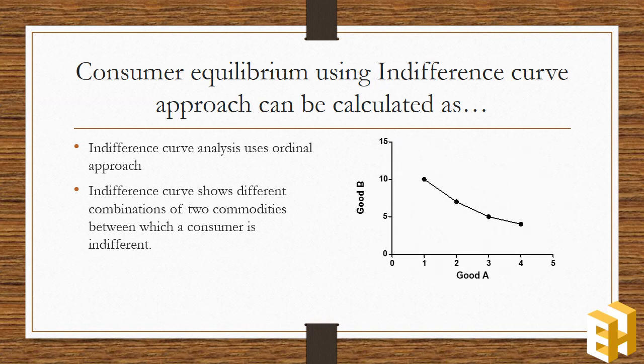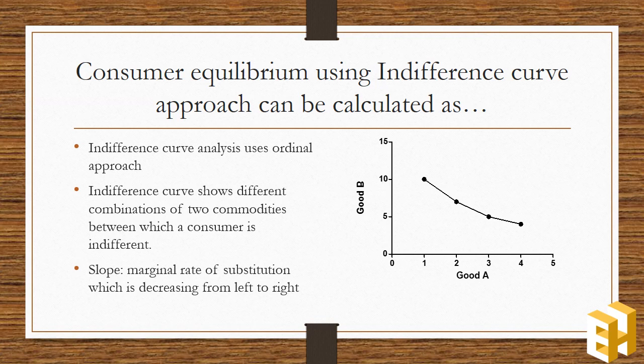It is the downward sloping curve convex to the origin. The slope is the marginal rate of substitution, how much of one good would be given up to consume one additional unit of the other good. It is decreasing from left to right.